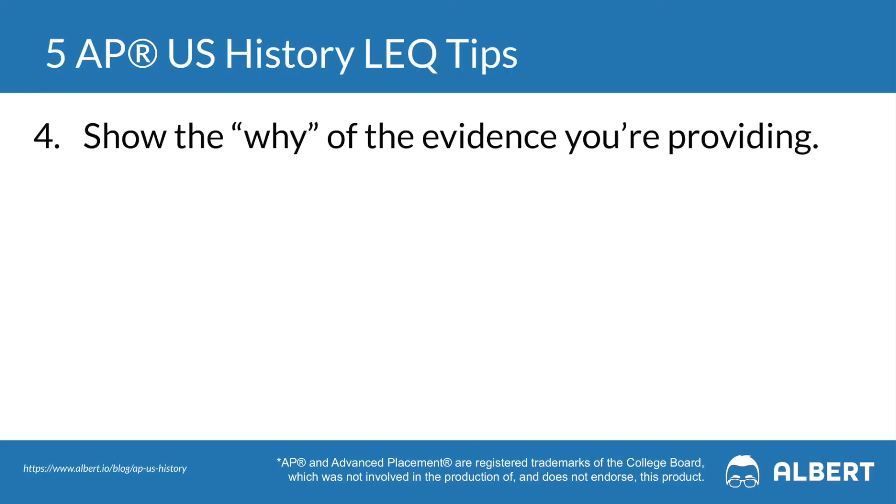For example, if you're thinking about Roe v. Wade, you might want to think about what led to it happening, what led up to that point, and then also what were the outcomes from Roe v. Wade actually happening, moving forward in relation to women's rights. Tip four is to make sure that you're showing the why whenever you state a concept — not just mentioning it but actually relating it back and explaining to the reader how it ties to your thesis and advances your argument.